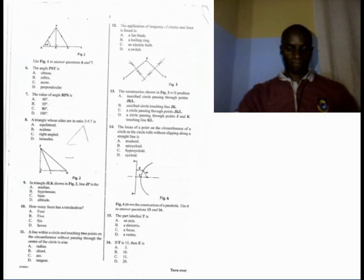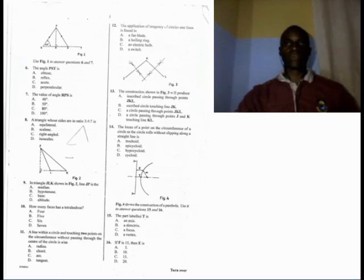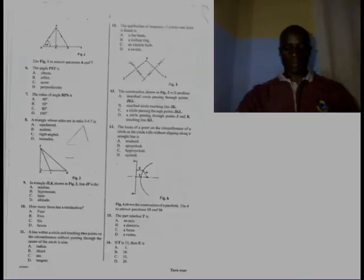Number 11. A line within a circle that touches two points on the circumference without passing through the center of the circle is — A, a radius...